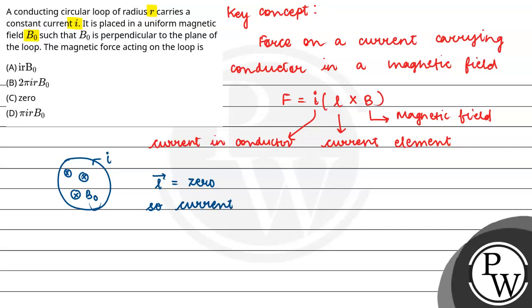Current element. I am going to write L vector is zero for circular loop.